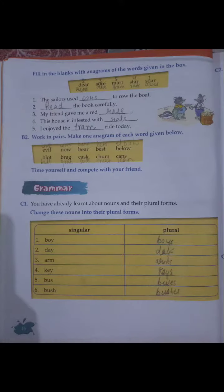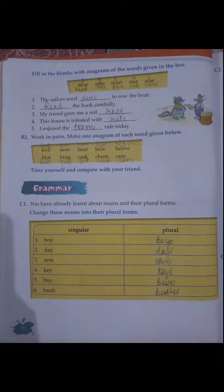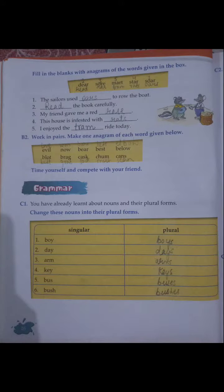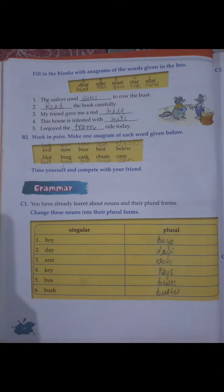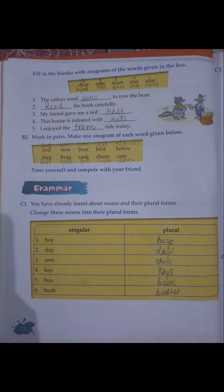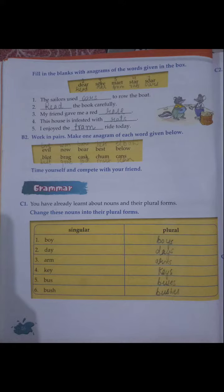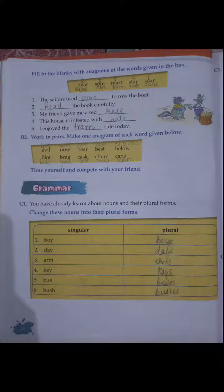Let's know what is singular and plural. A noun that stands for one person, animal, place, or thing is in singular number. A noun that stands for more than one person, animal, place, or thing is in plural number. A singular noun can be changed to a plural noun by adding 's'.